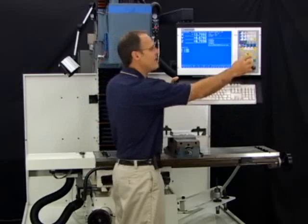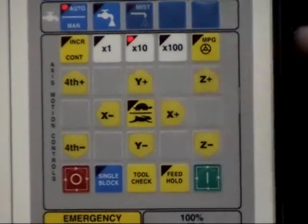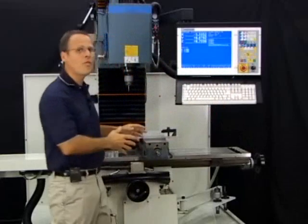What that means is when I hit the X positive jog button, that axis is going to continuously move as long as I hold that button down.